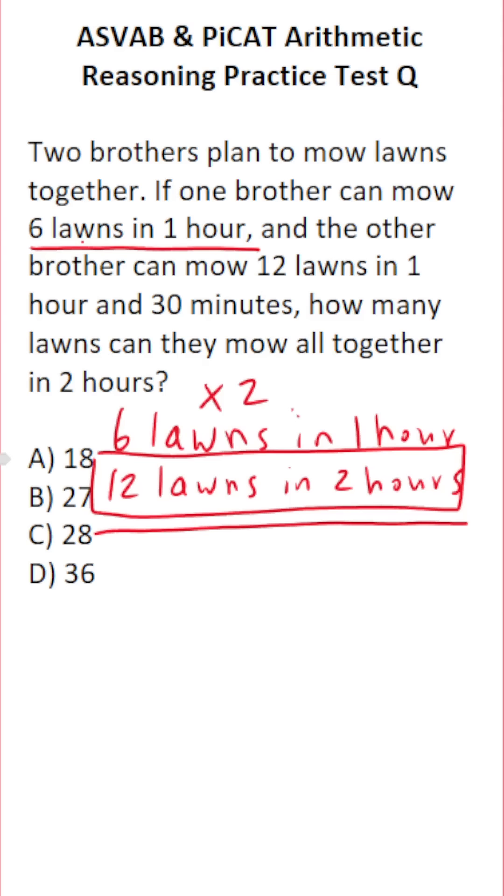Now, according to the problem, the other brother can mow 12 lawns in one and a half hours, one hour and 30 minutes. That's the same thing as 1.5 hours.